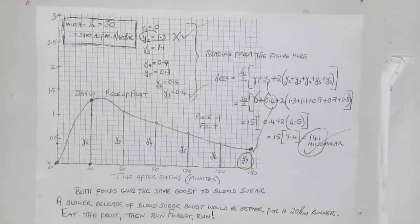That's the answer. But a slower release of blood sugar boost would be better for a 20-kilometer runner, I think you'd agree. Most people involved in athletics would get that. So eat the fruit, then run, Forest, run! Thank you.